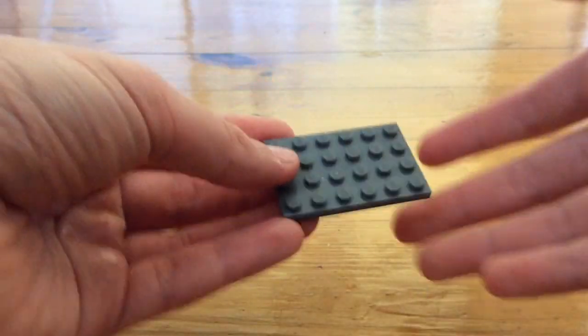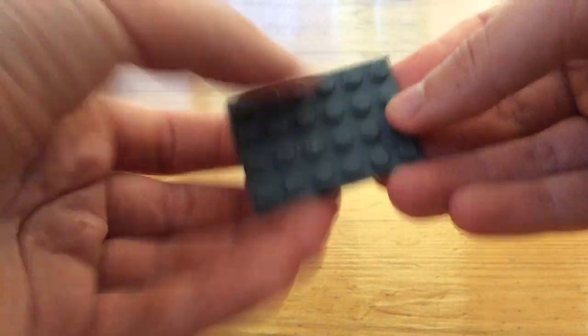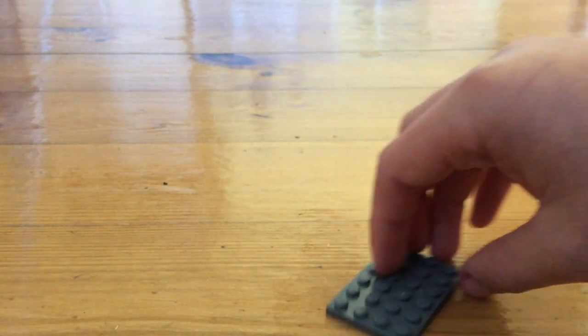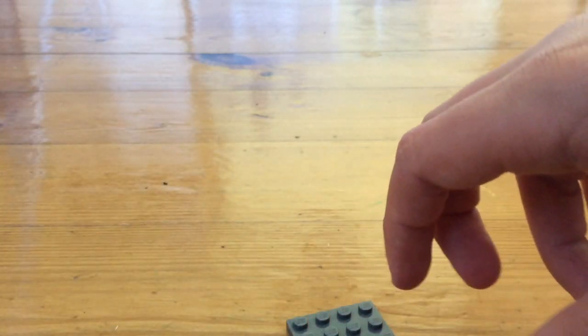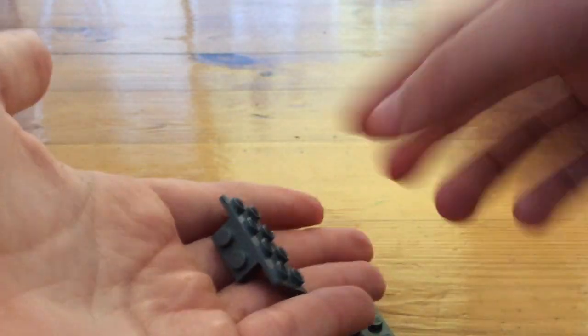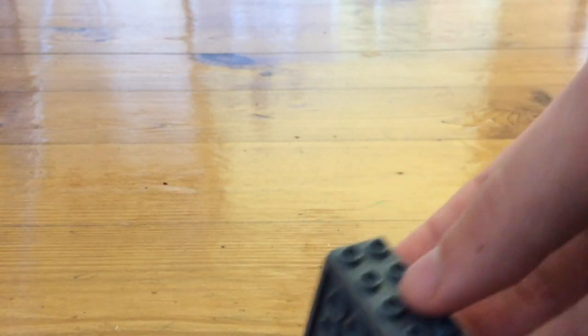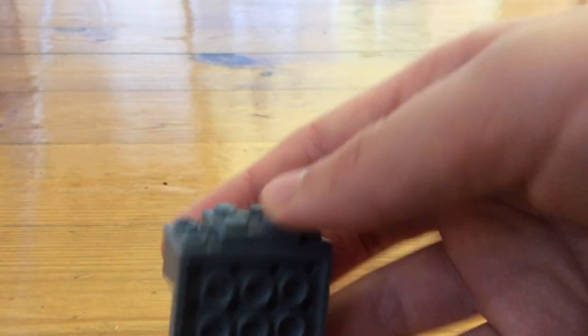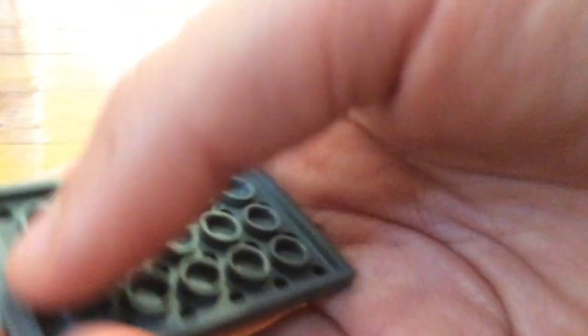Alright, I'm going to start off by taking this piece, a 4 by 6. Let's start off with the back. You got a 1 by 4 brick, put it at the back just like that. You take this piece, put that on. Now you just keep on building.